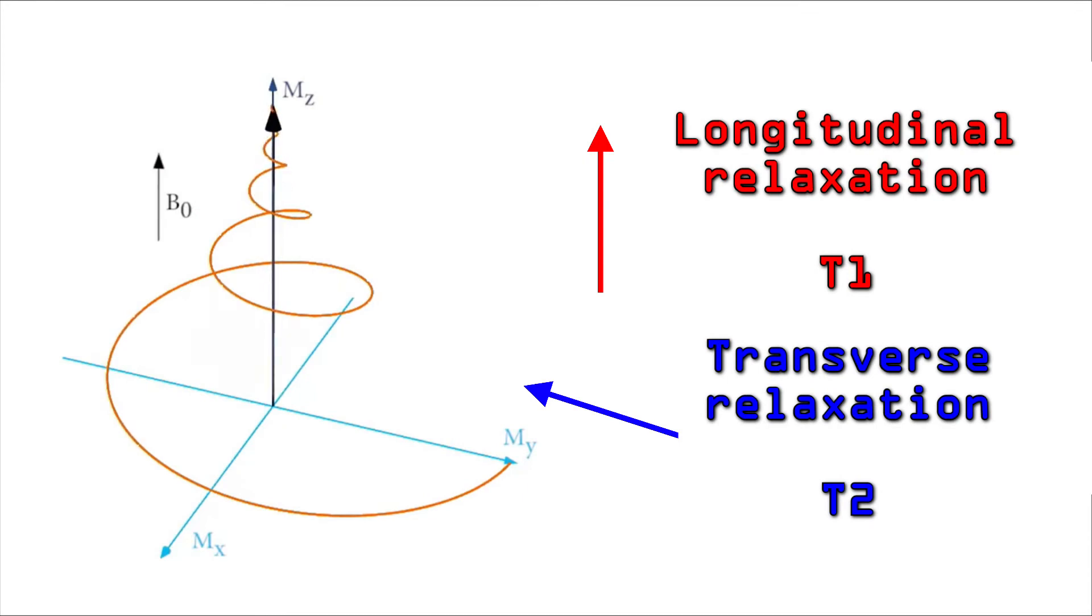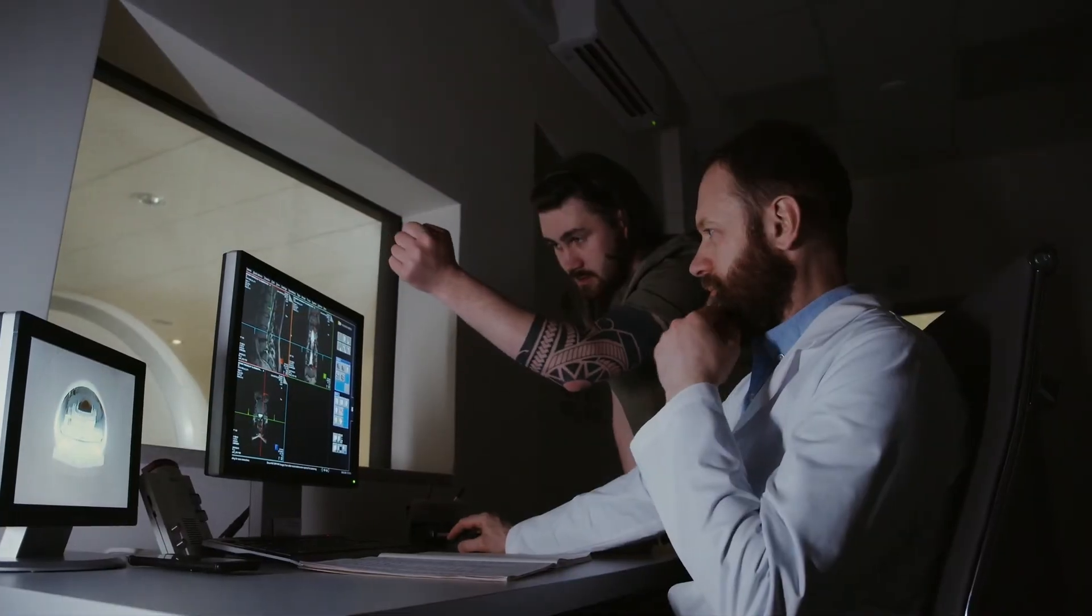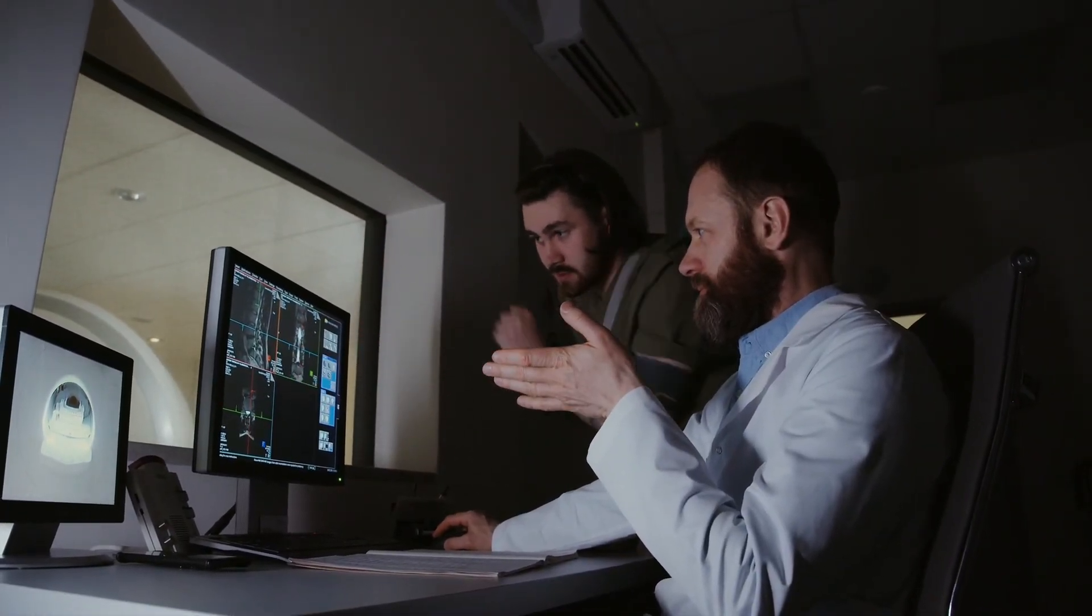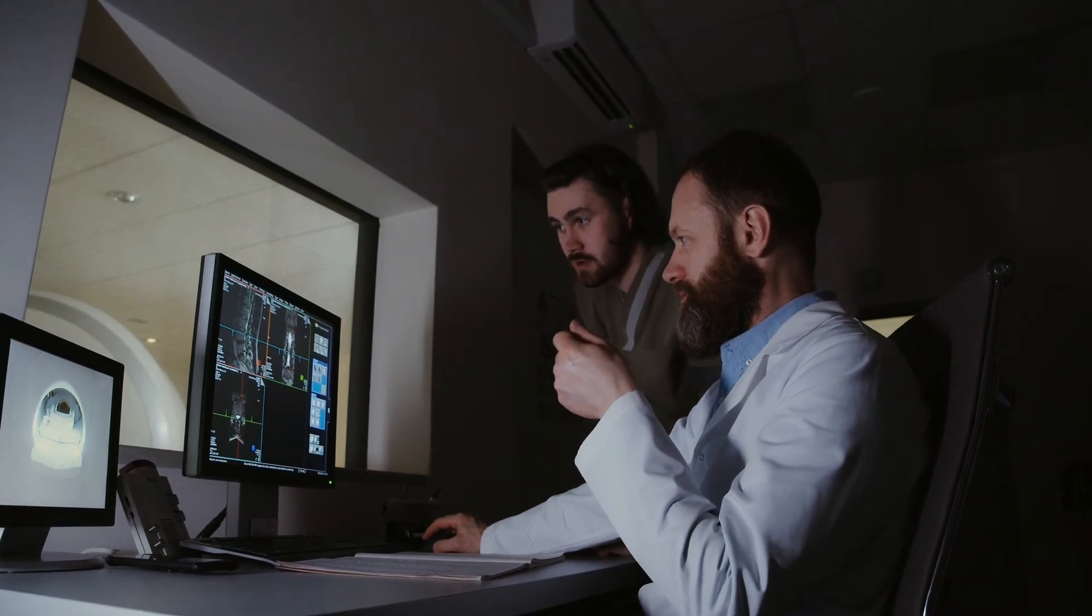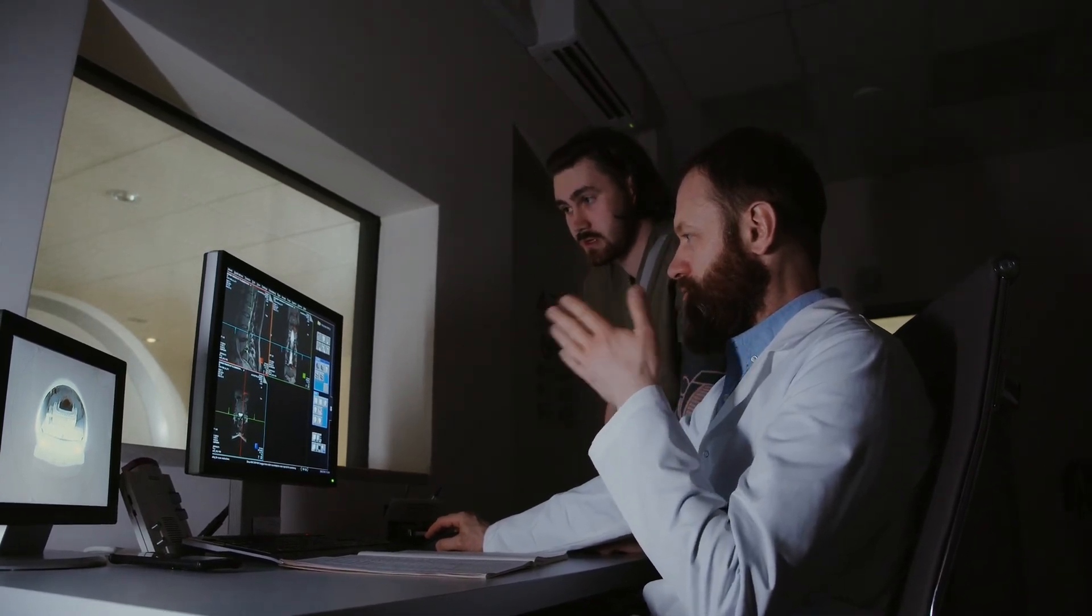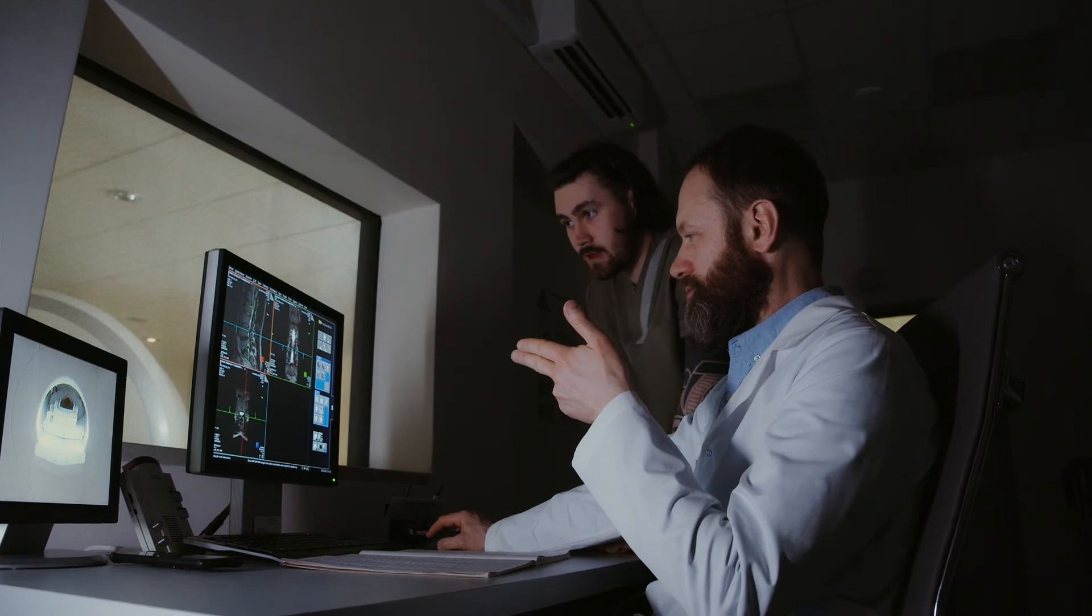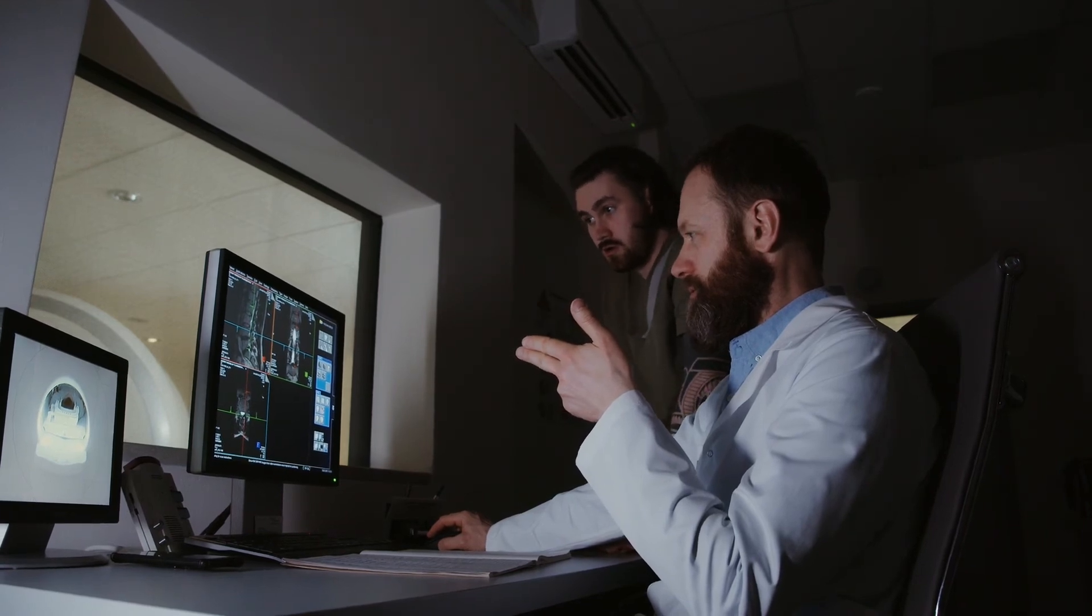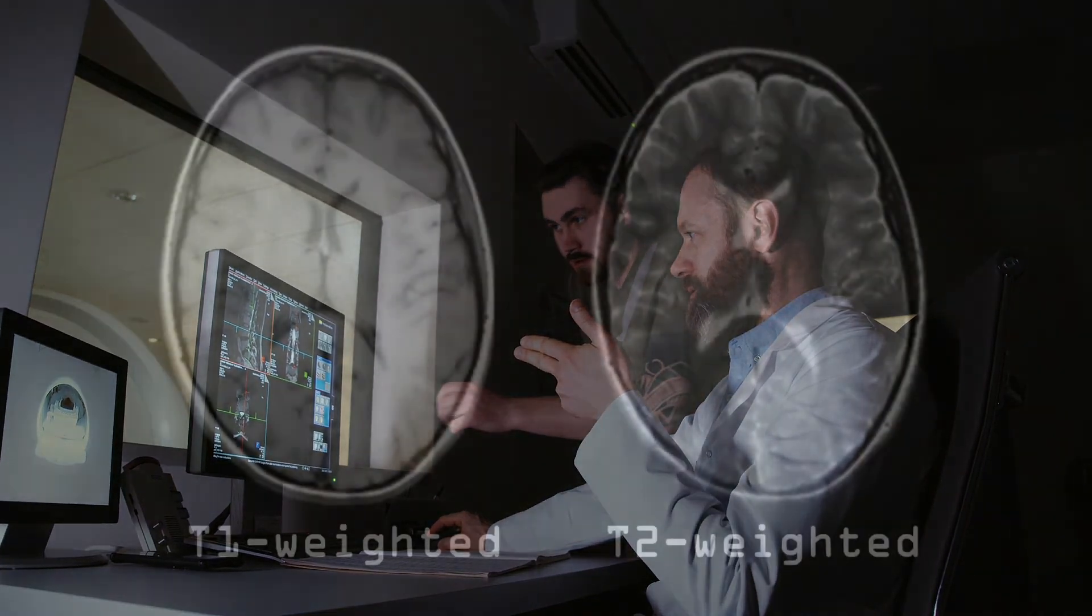Now, both relaxations, T1 and T2, give us images of the brain. But they have different properties. Also, because the process of transverse and longitudinal relaxation happens at different speeds, we need to adjust radio frequency parameters to either give us a T1-weighted image or a T2-weighted image.